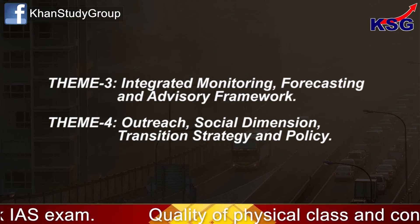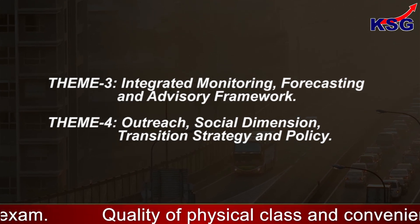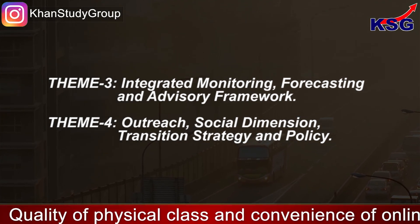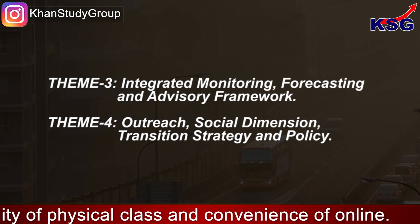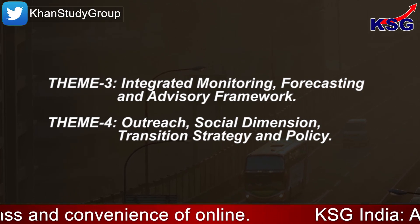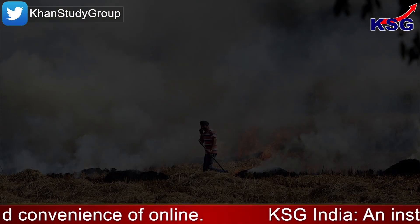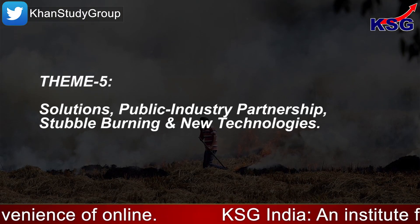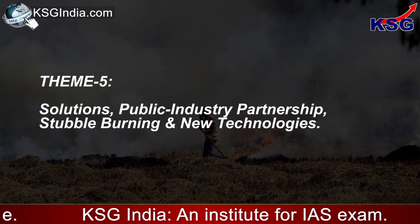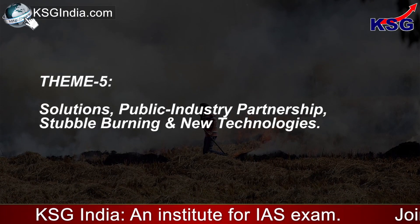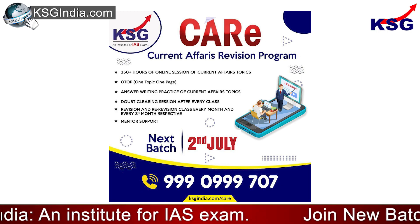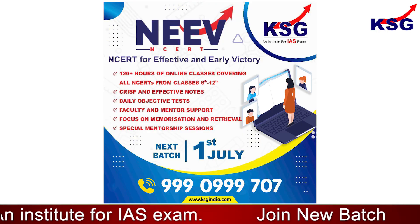Theme Four — Outreach, Social Dimension, Transition Strategy, and Policy. Theme Five — Solutions, Public-Industry Partnerships, Stubble Burning, and New Technologies. That's it for this explainer. Thank you so much for watching.